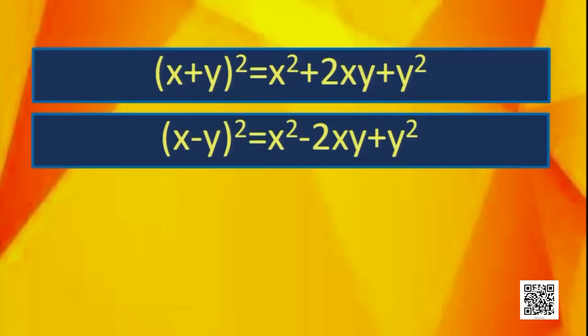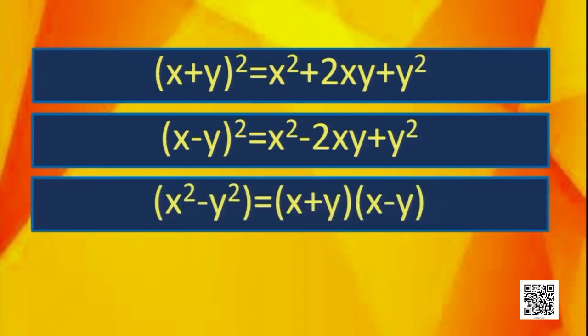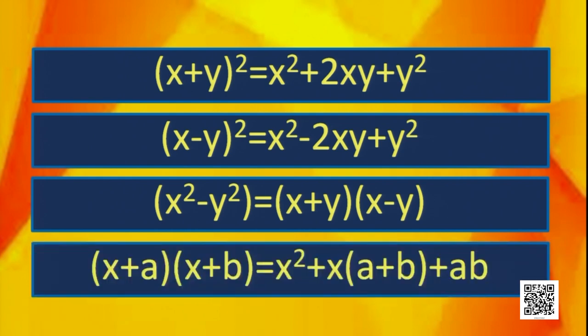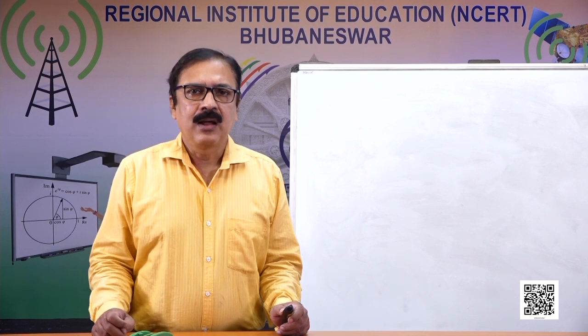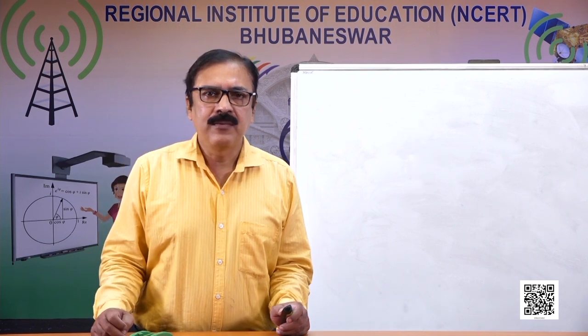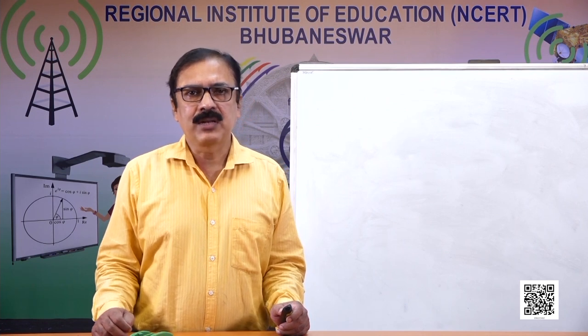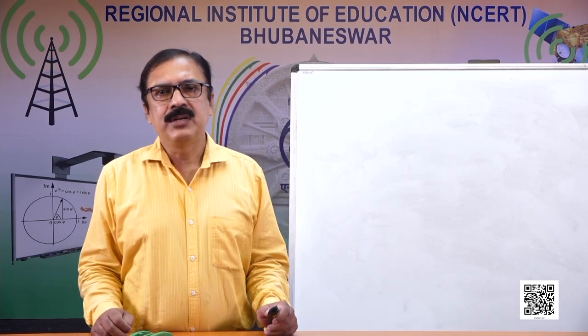Some more identities: (x - y)² = x² - 2xy + y²; x² - y² = (x + y)(x - y); and (x + a)(x + b) = x² + (a + b)x + ab. These are the identities we have gone through before this class. Now we have to discuss some more identities.